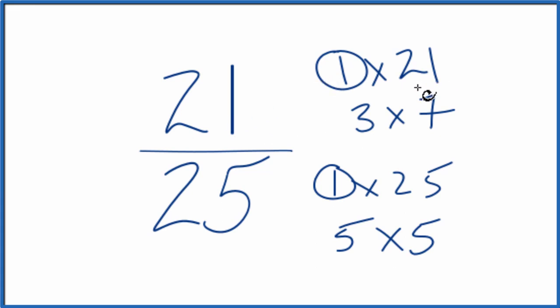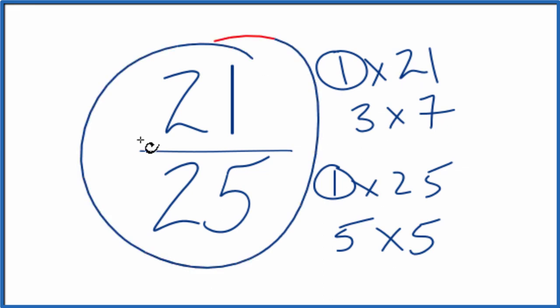So we take 21 divided by 1, we get 21. 25 divided by 1, we get 25. And that's what we started with.